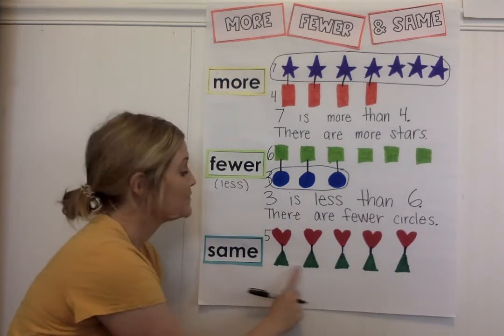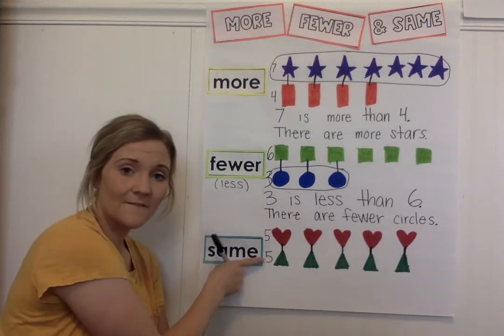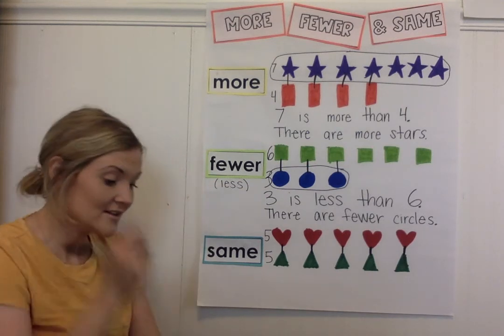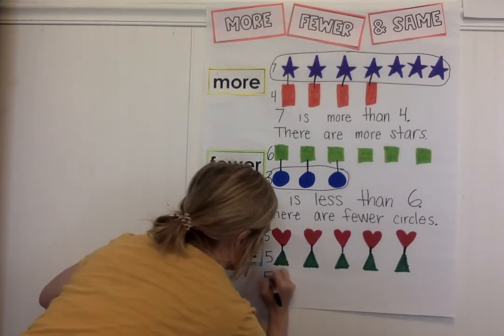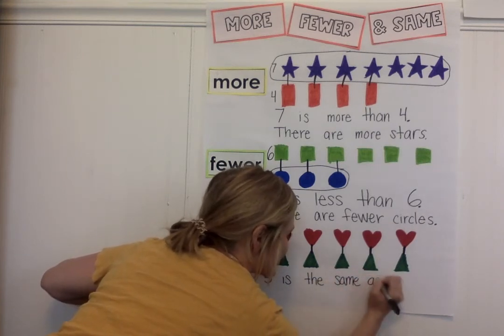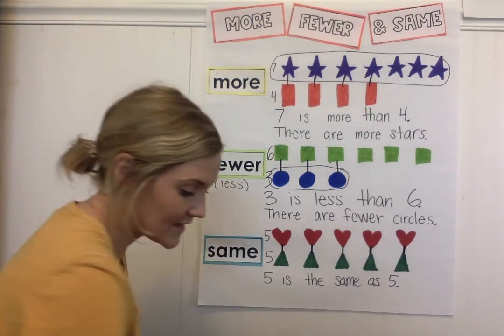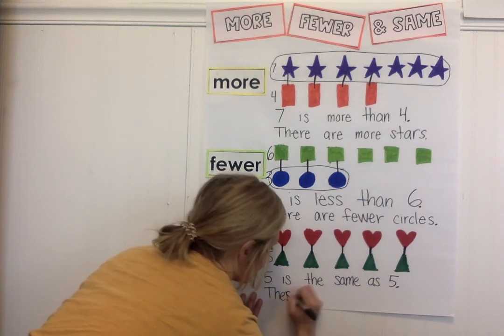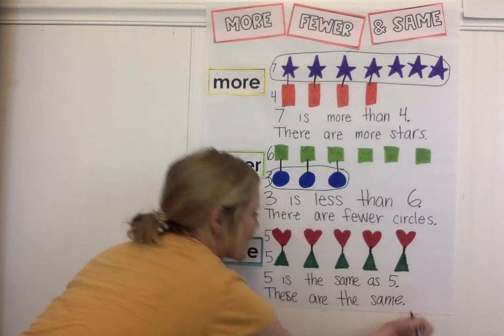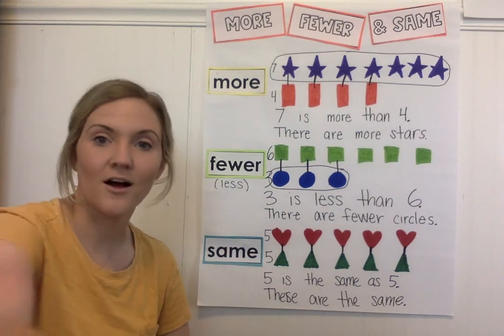Now let's count the green triangles: one, two, three, four, five. Five and five! Are those the same number? They are. So we would say five is the same as five — these are the same, meaning they are equal. There's not one that's more, there's not one that's fewer — they are the same. Everybody gets a buddy. Great job!